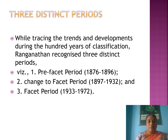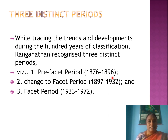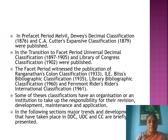Regarding the major developments, Dr. S. Ranganathan recognized three distinct periods in the history of classification. The first is the pre-facet period, falling between 1876 and 1896. The second is the transition to facet period, falling between 1897 and 1932. The third is the facet period, falling between 1933 and 1972.